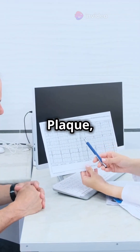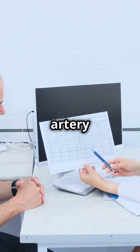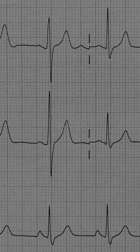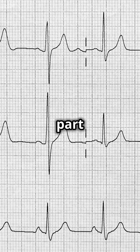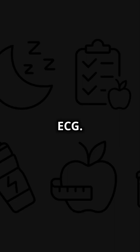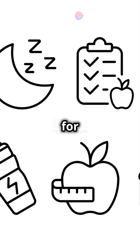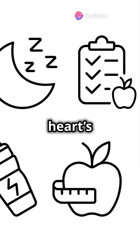P is for plaque, avoid artery blockages. Q is for QT interval, part of your ECG. R is for rate, your heart's beats per minute.